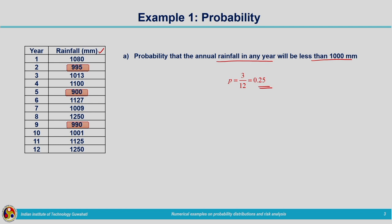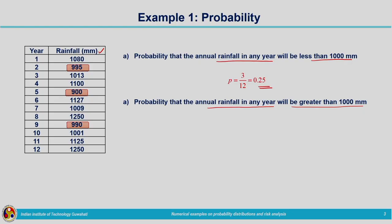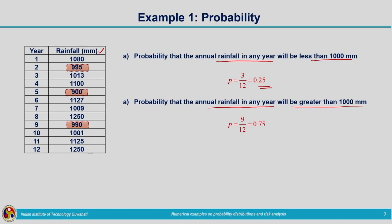For the probability that annual rainfall exceeds 1000 mm: three events are less than 1000 mm and there is no data point exactly equal to 1000 mm, so the remaining 9 events represent values greater than 1000 mm. The probability is P = 9/12 = 0.75. Adding the two probabilities gives 1, consistent with the law of total probability.